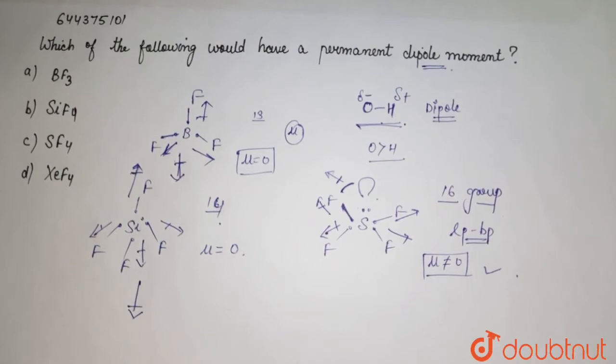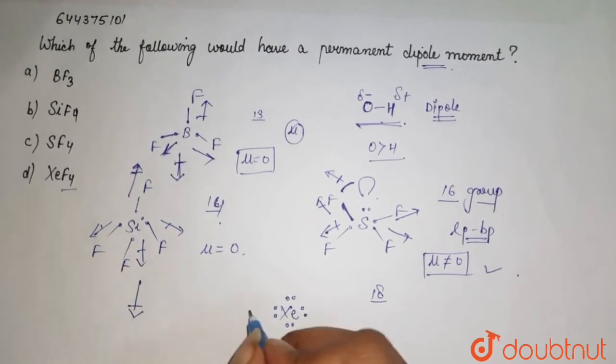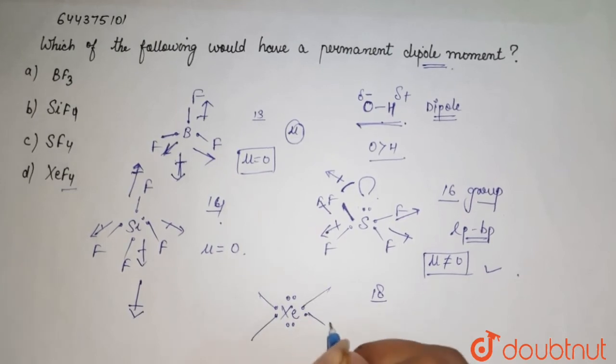Then we have XeF4. Xenon belongs to group 18, it is an inert gas or noble gas. It has eight valence electrons: one, two, three, four, five, six, seven, and eight. We have four fluorine atoms, one, two, three, and four, left with two lone pairs like this.